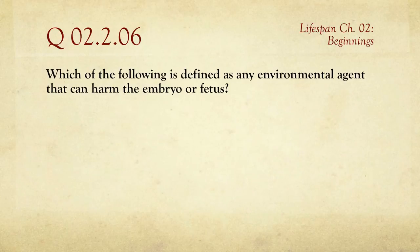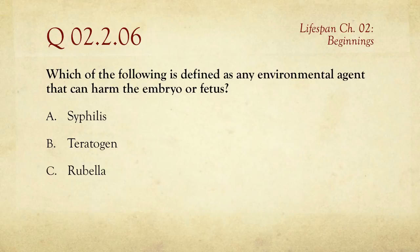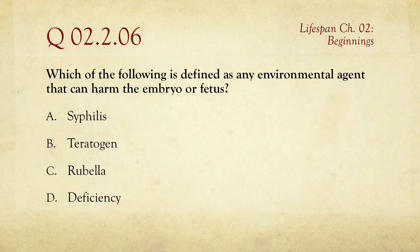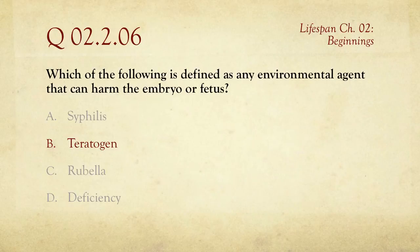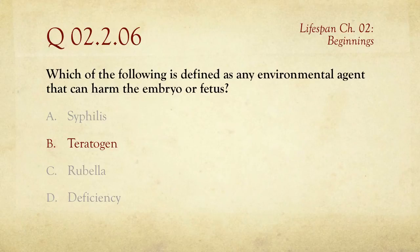Number six: which of the following is defined as any environmental agent that can harm the embryo or fetus? The choices are A, syphilis; B, teratogen; C, rubella; or D, deficiency. Syphilis is a sexually transmitted disease, rubella is a disease, and deficiency is a generic term. The answer is B, teratogen — from the Greek meaning 'origin of a monster' — which is the generic category term for anything that can cause harm to the embryo or fetus.